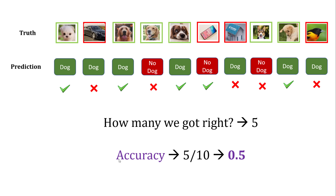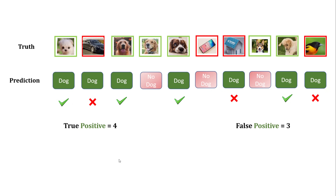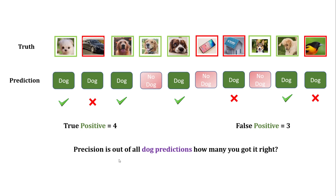We got five out of ten right, hence accuracy is 0.5. Now going back to only the positive class — forget the 'no dog' predictions. We saw true positive was four and false positive was three. Precision is: out of all dog predictions, how many did you get right? It is four out of seven — you had seven dog predictions and only four are actually dog, so precision is approximately 0.57.